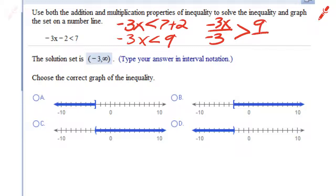9 over negative 3, what you're going to get is x is greater than negative 3, or x is to the right of negative 3.